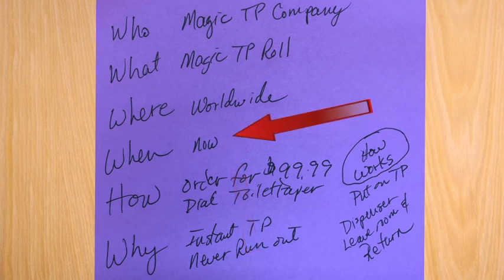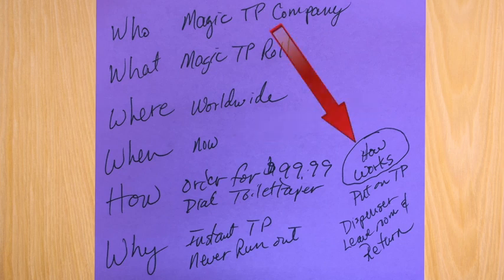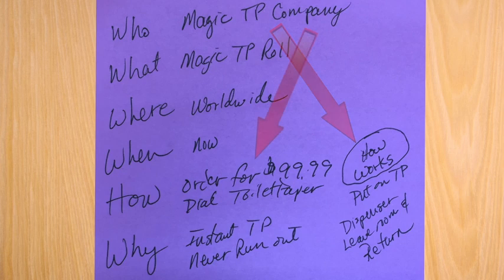When: you can get it now — this is something on the market available now. How: I've got two different answers here. How does it work? You put this empty toilet paper roll on your dispenser, walk out the room, come back — boom, it's full of toilet paper. How do you get it? You can order it online, or call — I've got a phone number: dial 'toilet paper.'